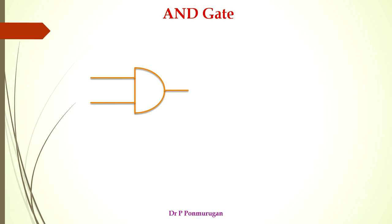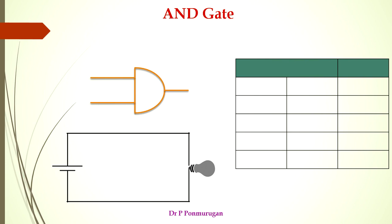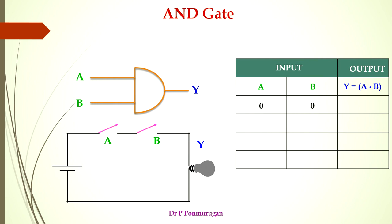Let us see the gates and their functionalities one by one. The first is the AND gate. This is the symbol of an AND gate, and we are going to explain its basic character using the truth table and a circuit. The truth table gives the expected or desired output for a particular combination of inputs. In this AND gate we have two inputs A and B, and the output being Y. The circuit has two switches.